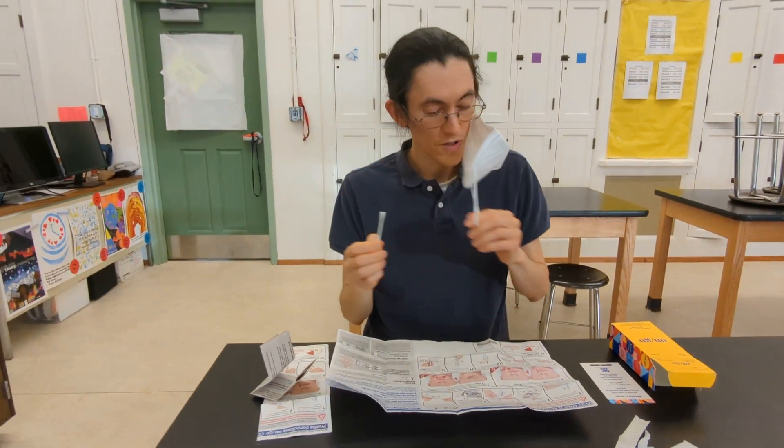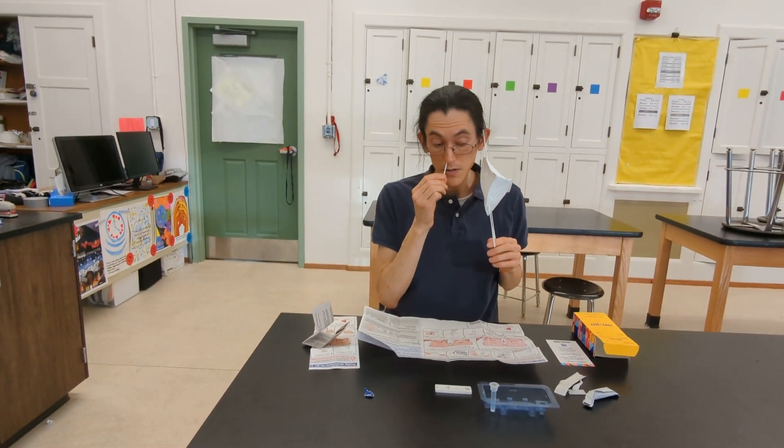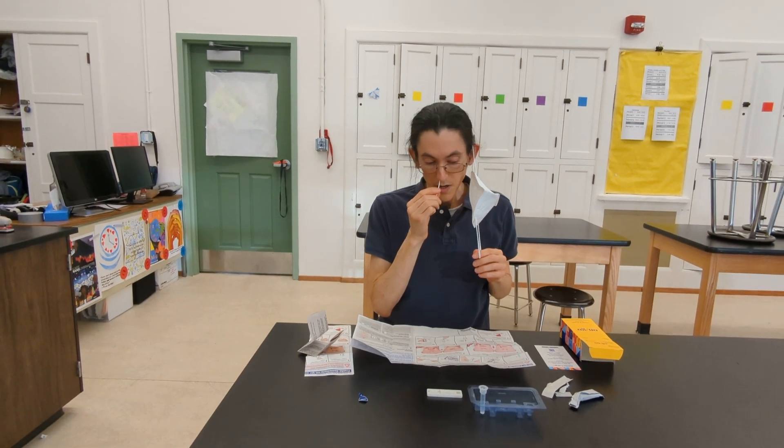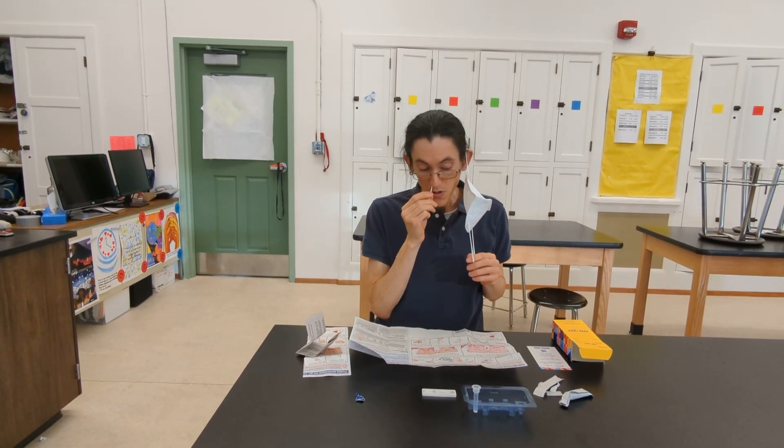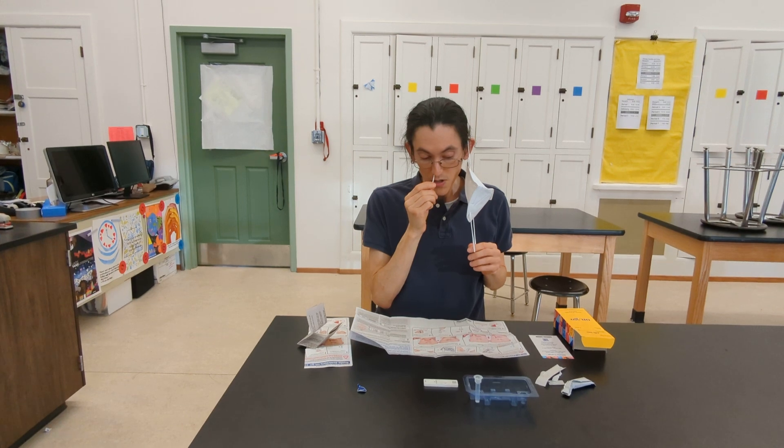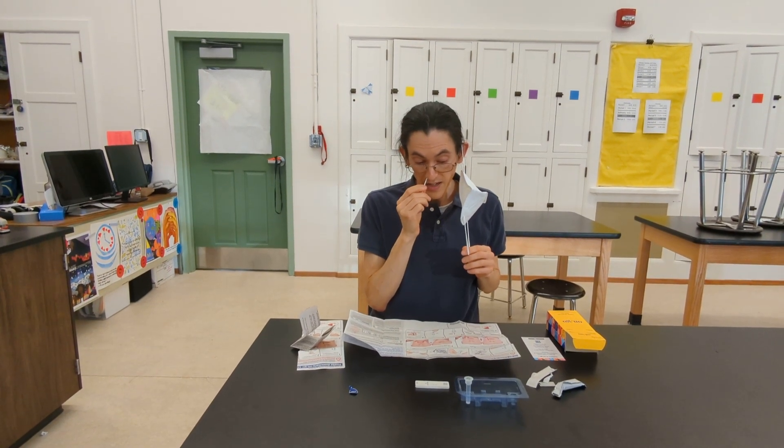You're going to gently insert the swab into your nostril, about three quarters of an inch, and you're going to slowly rotate around five times in a circular pattern for a total of 15 seconds.